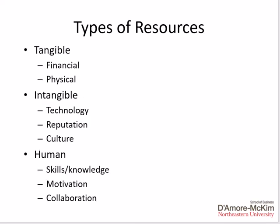There are several different types of resources worth noting because they have implications for competitive advantage. First, we have tangible resources, which involve physical resources such as plant and equipment and factories, as well as financial resources such as cash or investments that the firm can use to make investments. Then we have intangible resources such as technology, the brand or reputation, and the firm's culture — things that are not physically tangible but do exist. Then there are human resources, which involve the skills and knowledge of employees, their motivation, and their collaboration.